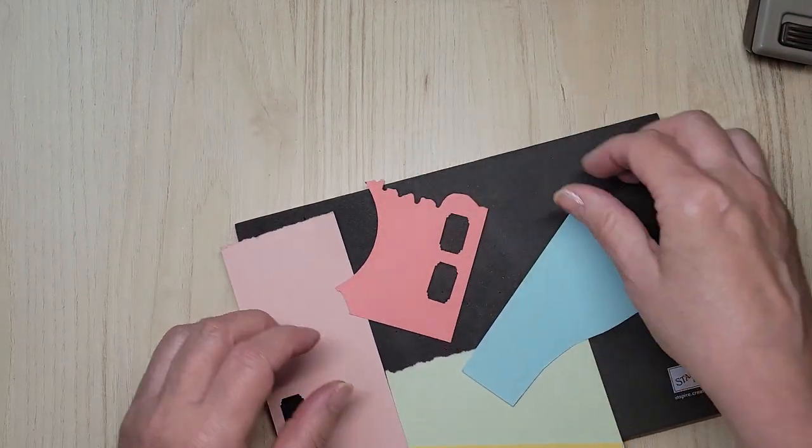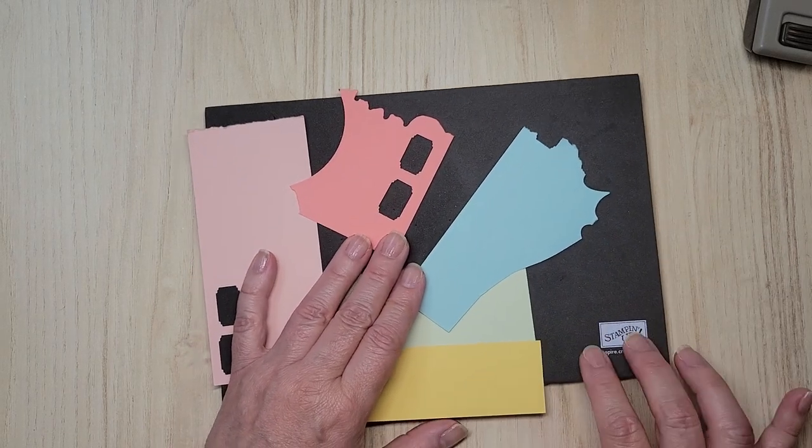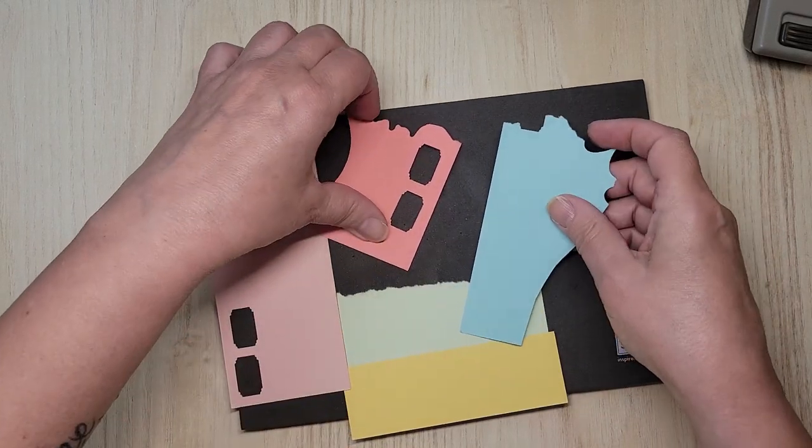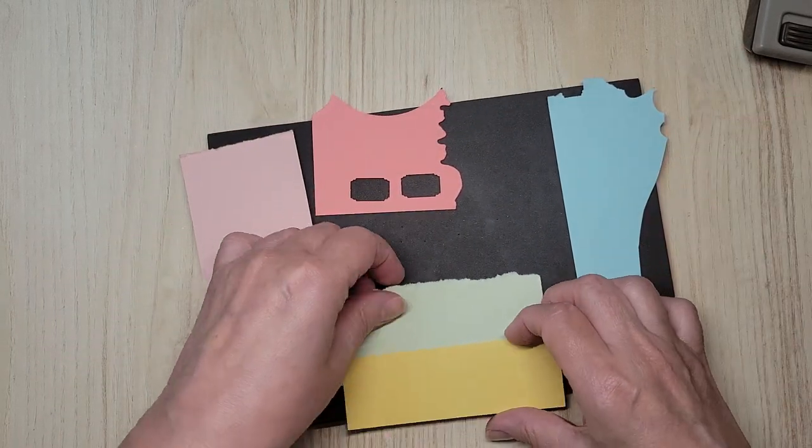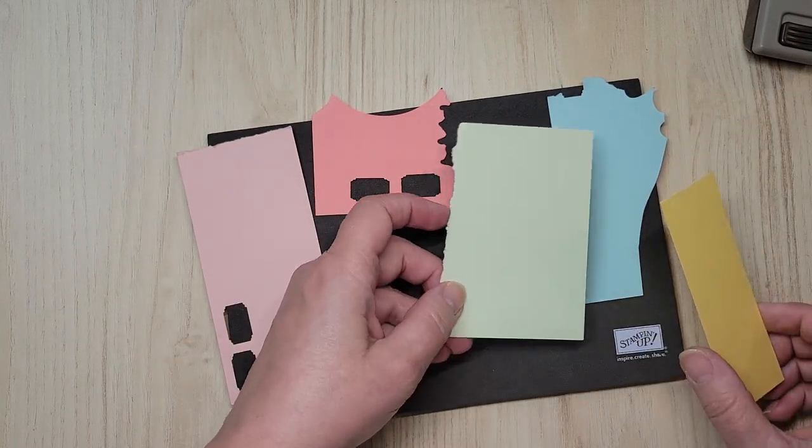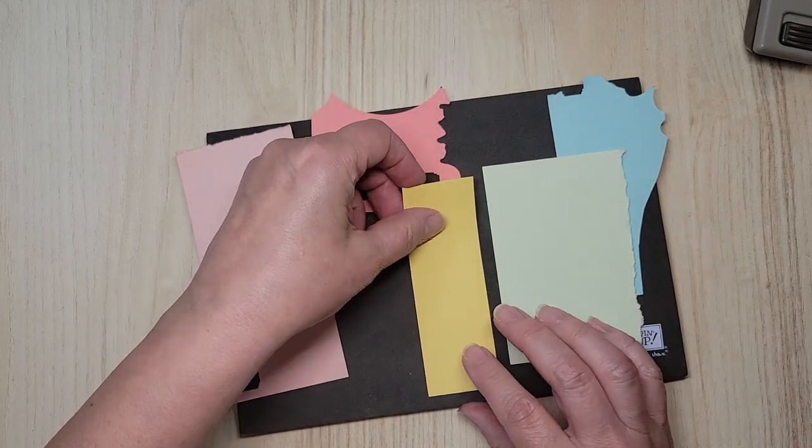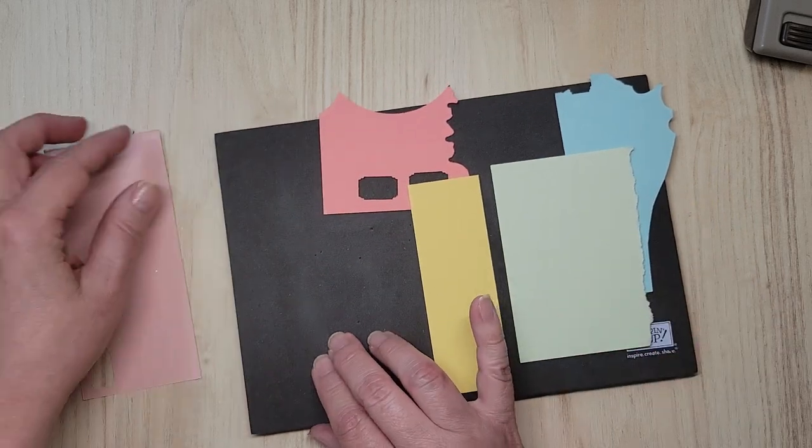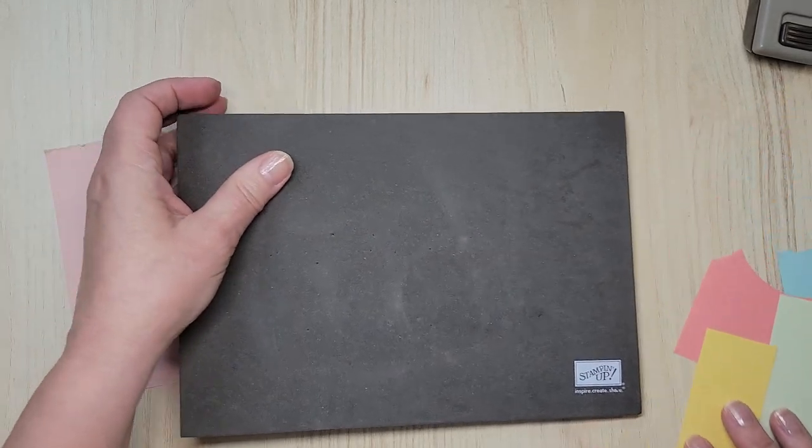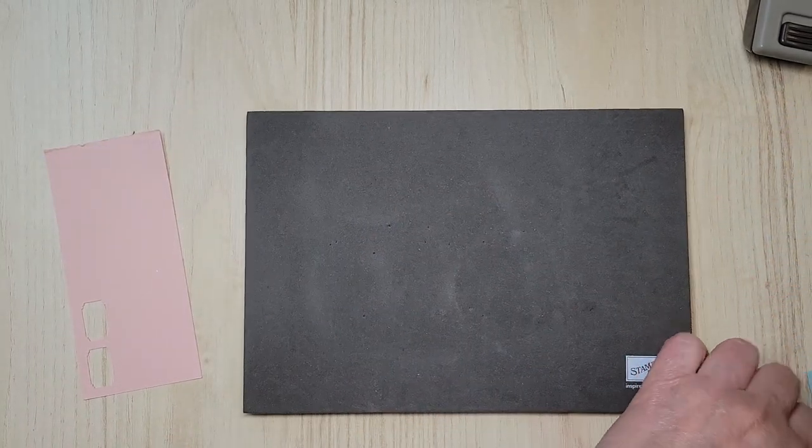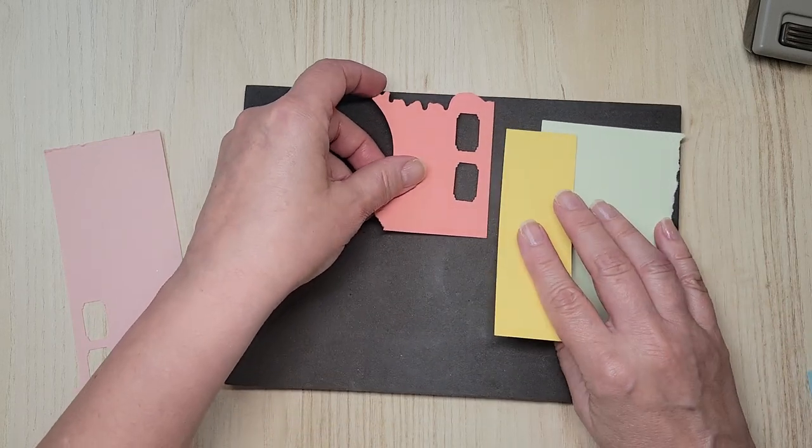Because this is photopolymer I'm going to be stamping on my Stampin' Pierce mat. In the past I've said use a magazine, use a stack of paper, use whatever and I found that I'm not getting the clearest images. This is foam but it's a nice dense foam so it doesn't get smushed.